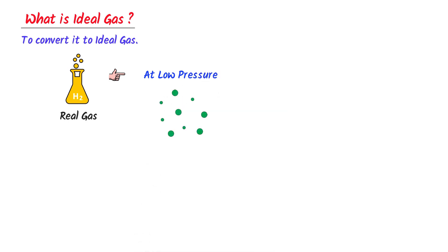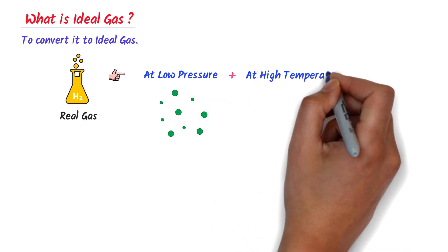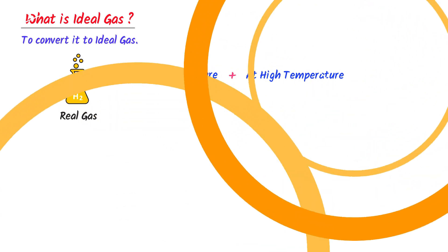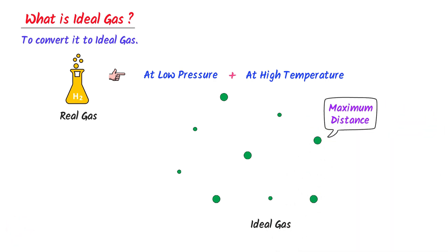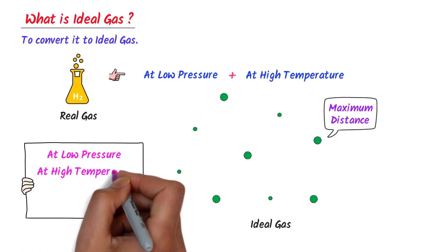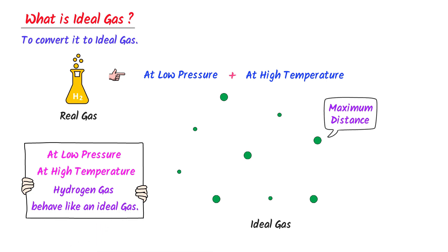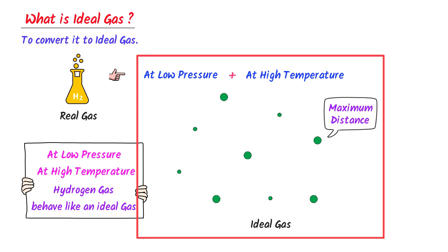Now, listen carefully. I keep the hydrogen gas at low pressure and the molecules are far away from each other. Secondly, I provide very high temperature to it. As a result, the molecules would further move away from each other, so we can see that molecules are at maximum distance from each other. Thus, at low pressure and high temperature, hydrogen gas behaves like an ideal gas. Remember that hydrogen gas is a real gas which we use in our daily life, while hydrogen gas at low pressure and high temperature is behaving like an ideal gas. So at low pressure and high temperature, some real gases like hydrogen gas can behave like an ideal gas.